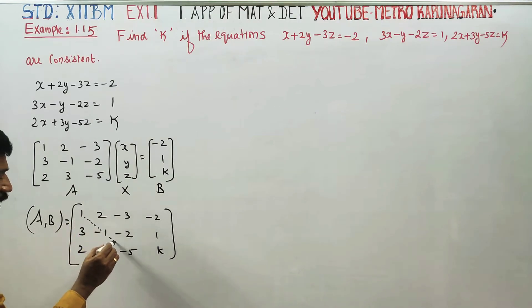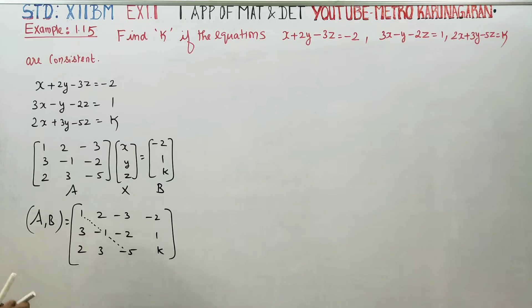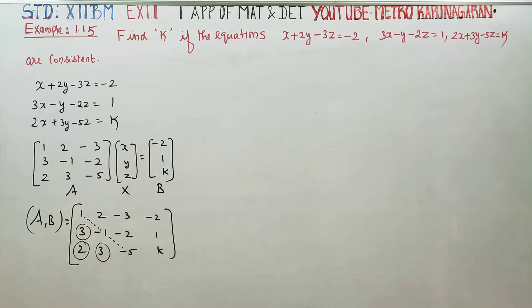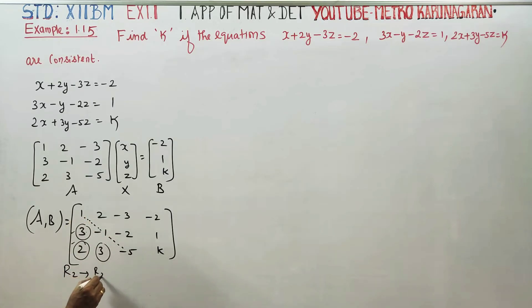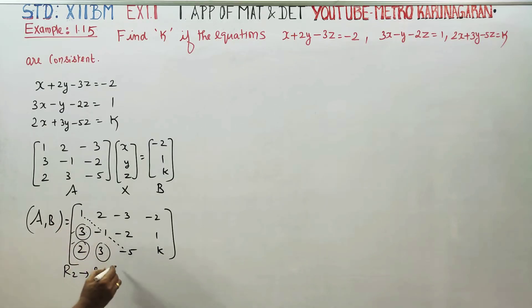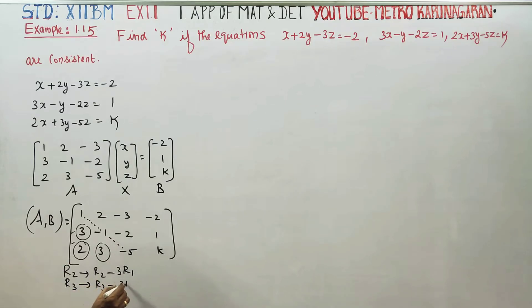We apply row reduction. The main diagonal is targeted. We perform R2 equals R2 minus 3 times R1, and R3 equals R3 minus 2 times R1.